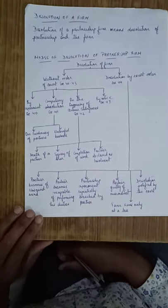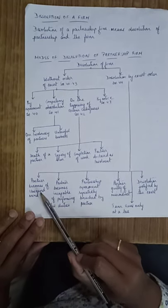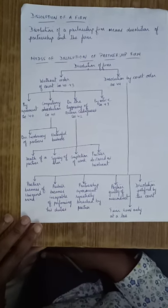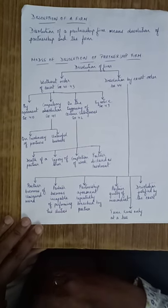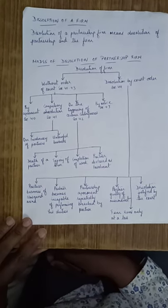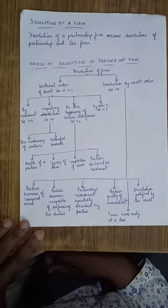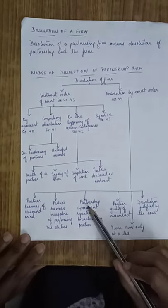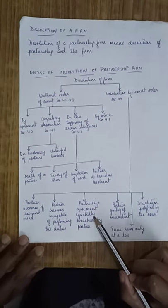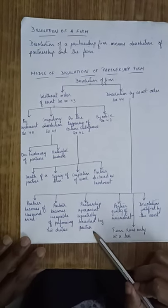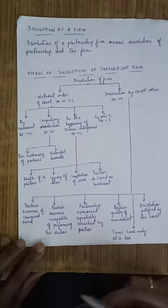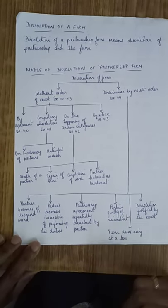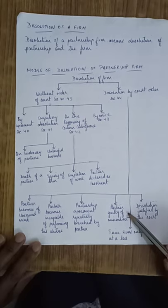For dissolution by court order under Section 44, the court intervenes in the following circumstances: first, when a partner becomes of unsound mind and is unable to contribute to the functioning of the firm; second, when a partner becomes incapable of performing his duties — for example, due to an accident or disability; third, when the partnership agreement is repeatedly breached by a partner, meaning the partner works against the partnership agreement.